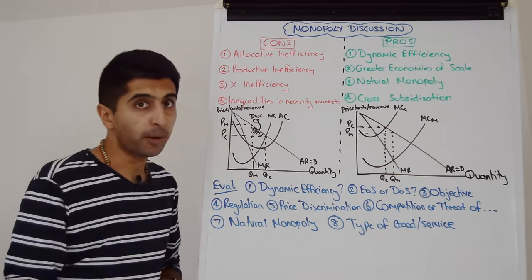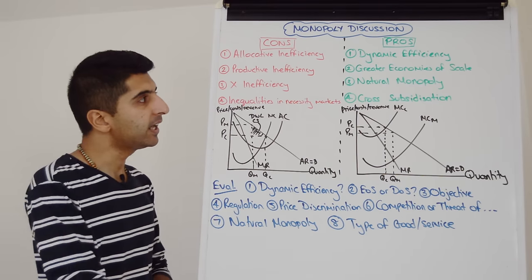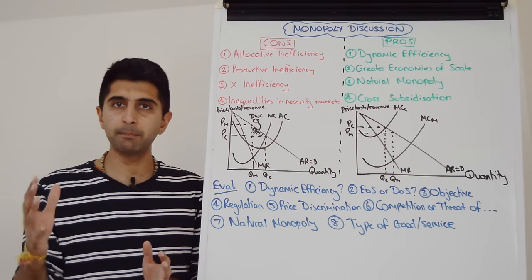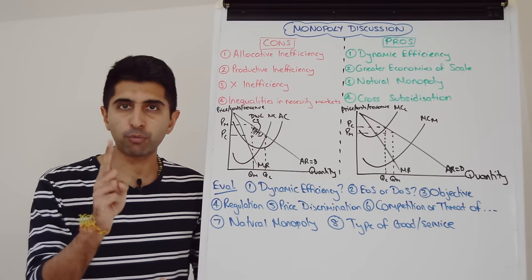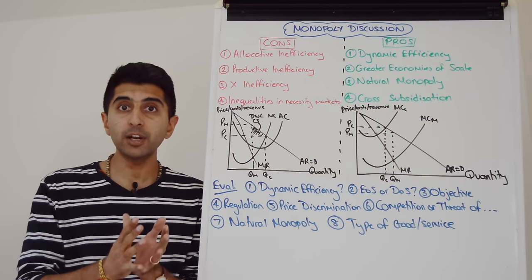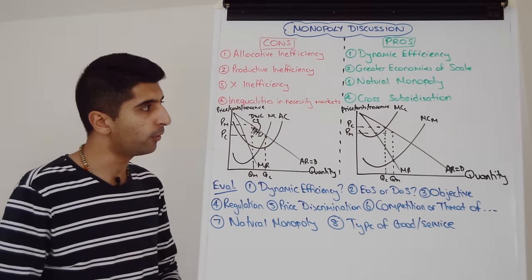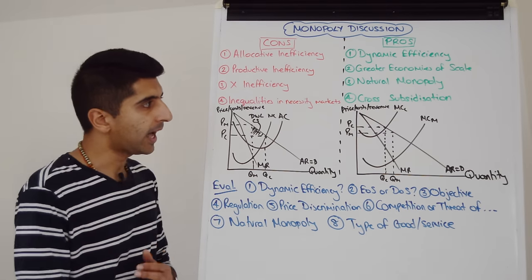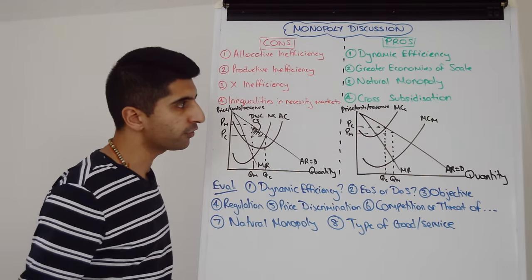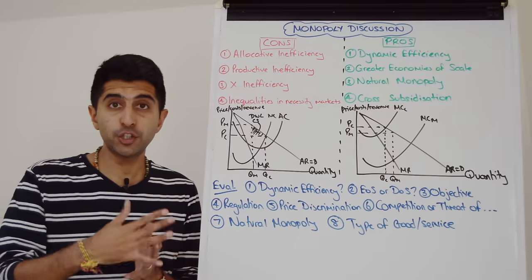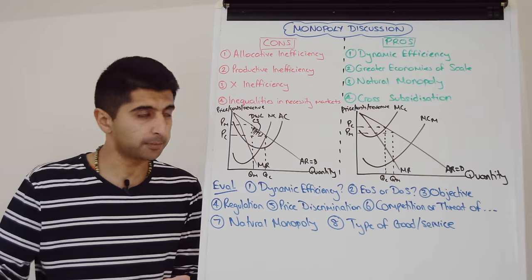We could argue number two, a very powerful point. Despite the productive inefficiencies of monopoly compared to competitive firms, they may still be exploiting greater economies of scale purely because of their size. We go straight to this diagram down below. It can clearly be seen that the monopoly's marginal cost curve is lower than the marginal cost curve of competitive firms due to greater economies of scale.